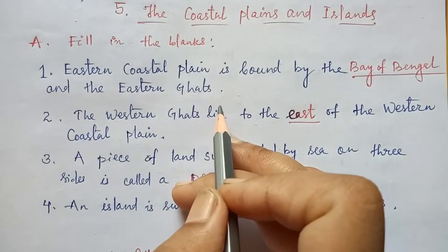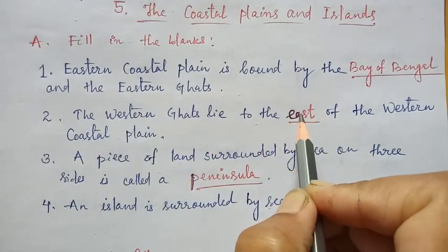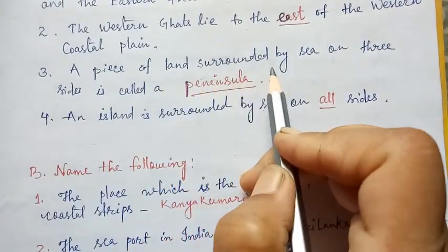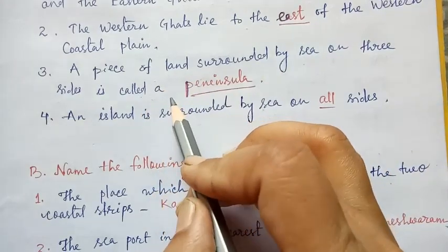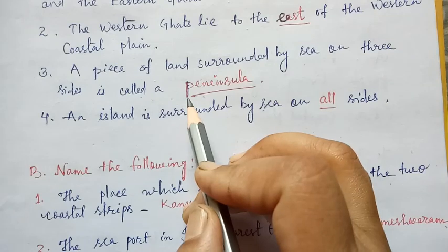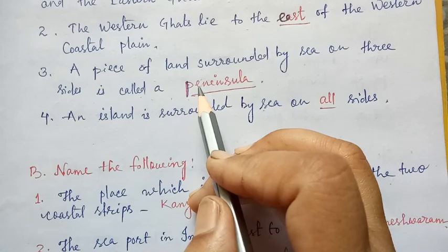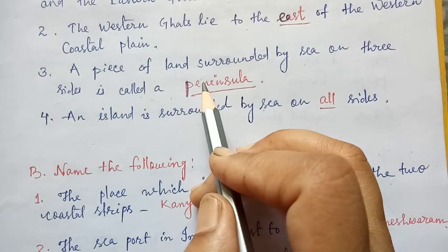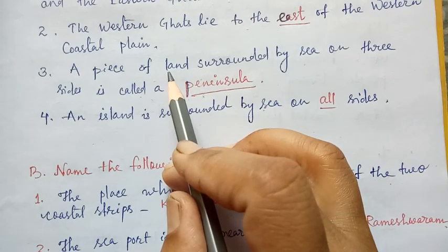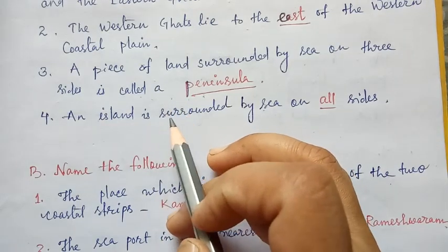The Western Ghats lie to the east of the Western Coastal Plain. A piece of land surrounded by sea on three sides is called a peninsula. Our India is a peninsula — it is bounded on three sides: in the east by the Bay of Bengal, in the west by the Arabian Sea, and at the bottom by the Indian Ocean.